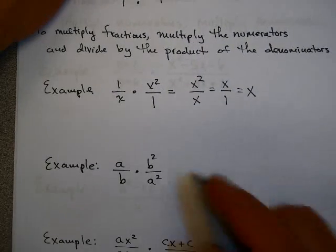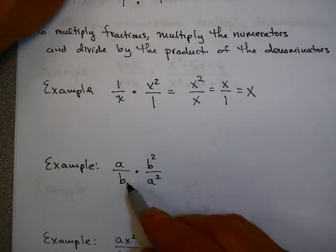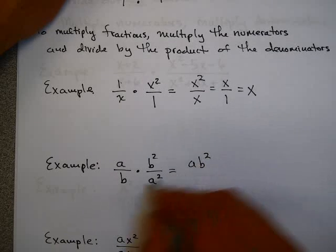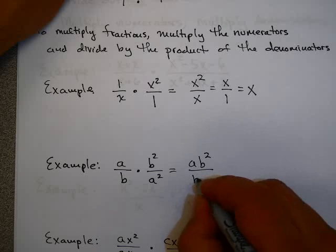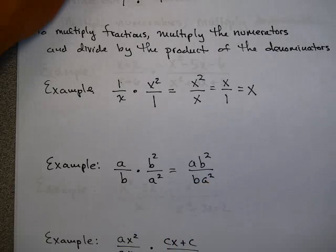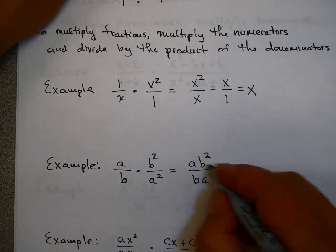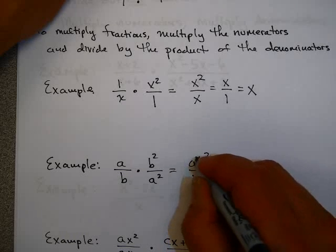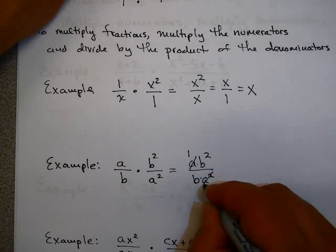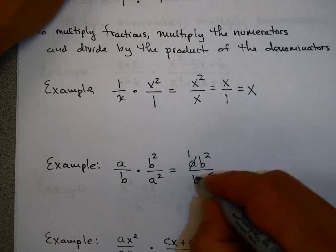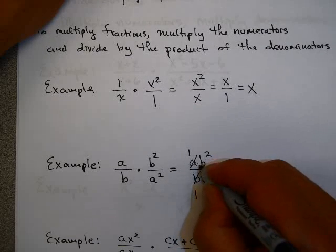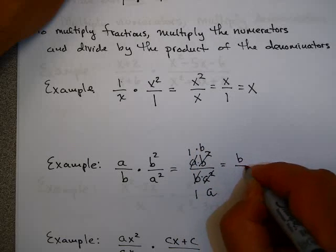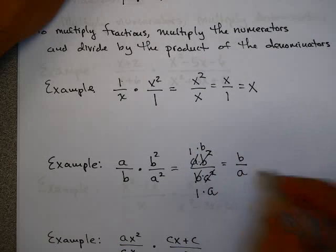I could do the same thing here: a times b squared is ab squared, and b times a squared is ba squared. Don't forget to simplify — these are factors, not terms. So a goes into a once, a squared goes into a times. b goes into b once, b goes into b squared b times. So 1 times b is b and 1 times a is a.